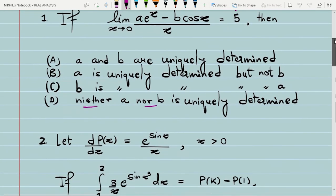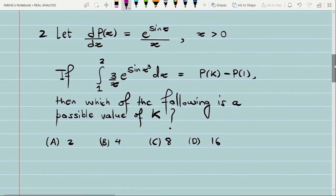Let's see another interesting problem for the day. You are given a function P. If you take the derivative of that with respect to the independent variable x, that is d/dx of P(x), then this comes out to be equal to e^(sin x) divided by x. Of course, this is defined only when your x is positive. Further, you are given this information: the integral of 3/x times e^(sin x^3) - this is an angle, sin x^3.